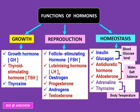Luteinizing hormone (LH) stimulates ovulation — the release of the secondary oocyte from the ovary into the fallopian tube. Estrogen and progesterone stimulate the building up of the endometrium, the layer of blood and tissues in the uterus, to prepare for the implantation of an embryo in the menstrual cycle. Androgens are male sex hormones, one of which is testosterone. Testosterone stimulates the production of sperms from the testes.